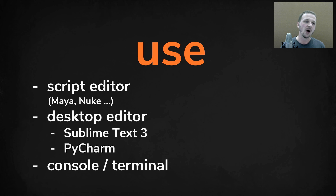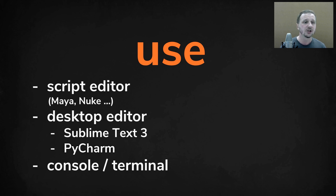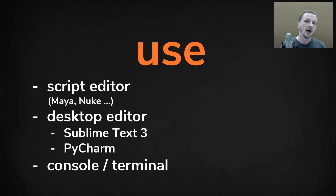So how do you use Python best? The easiest way, especially if you're in VFX and animation and working in Maya, Nuke, or Houdini, is to just open the script editor, select Python as your scripting language, and then execute it. Copy code from the internet and use it.